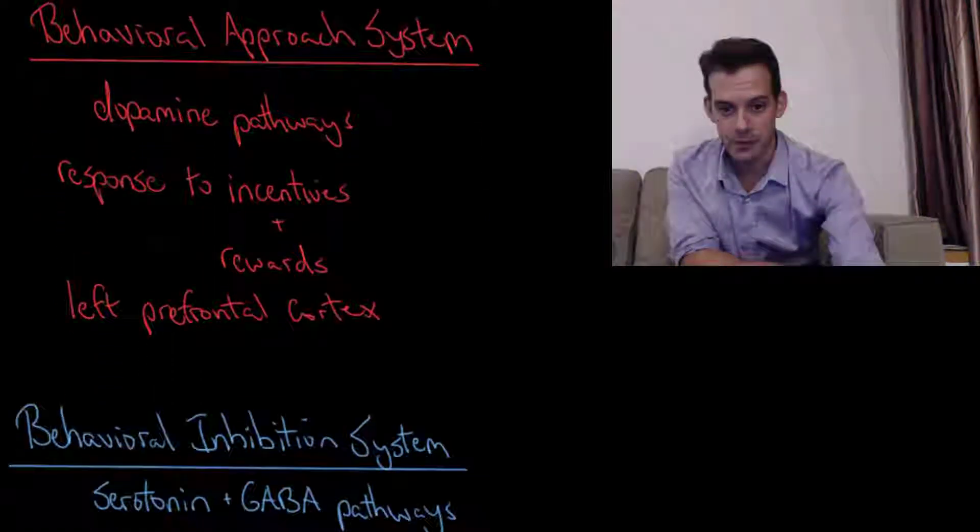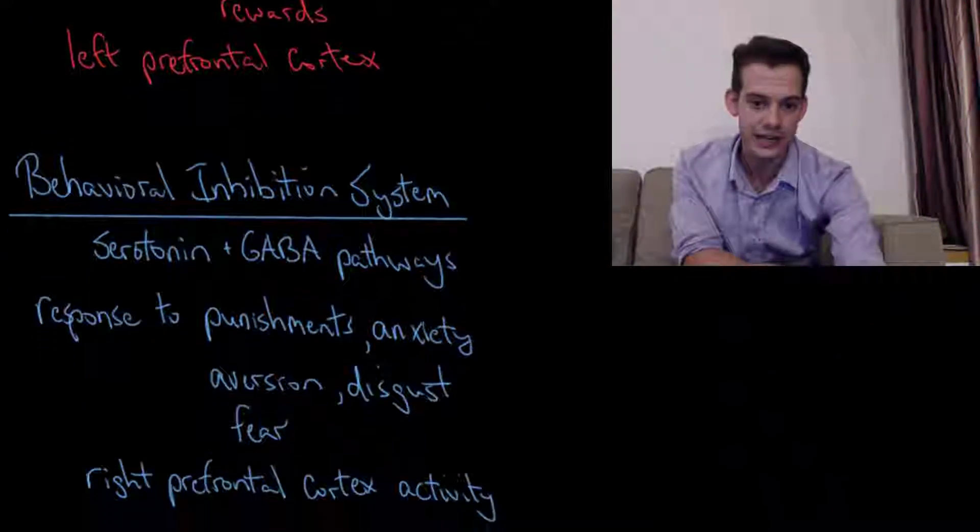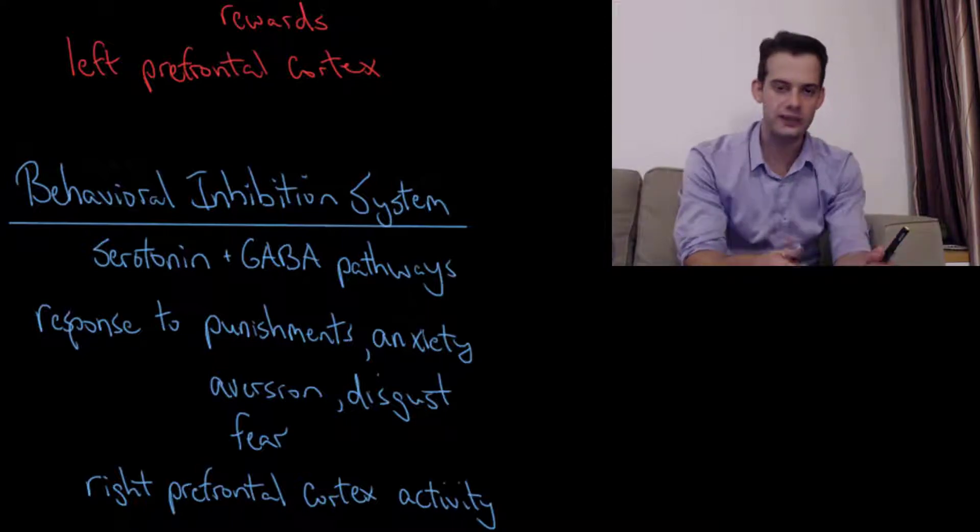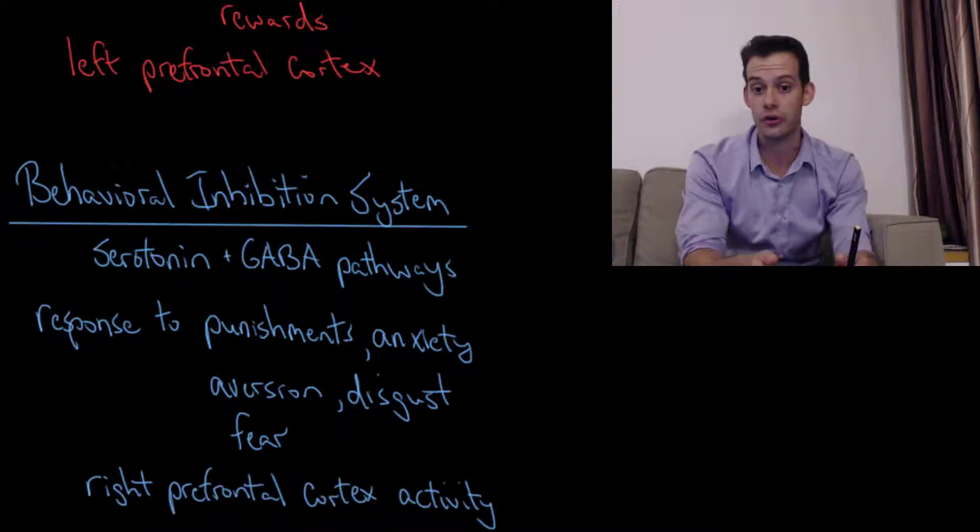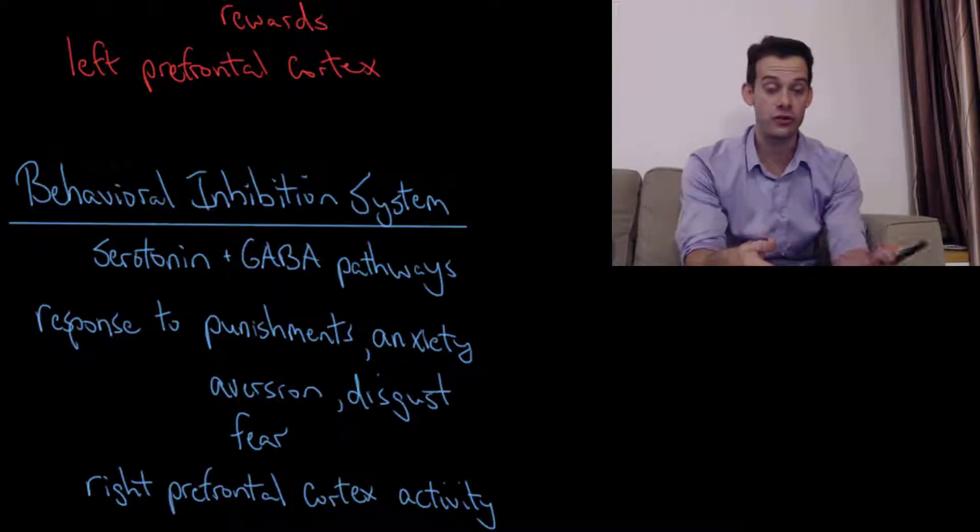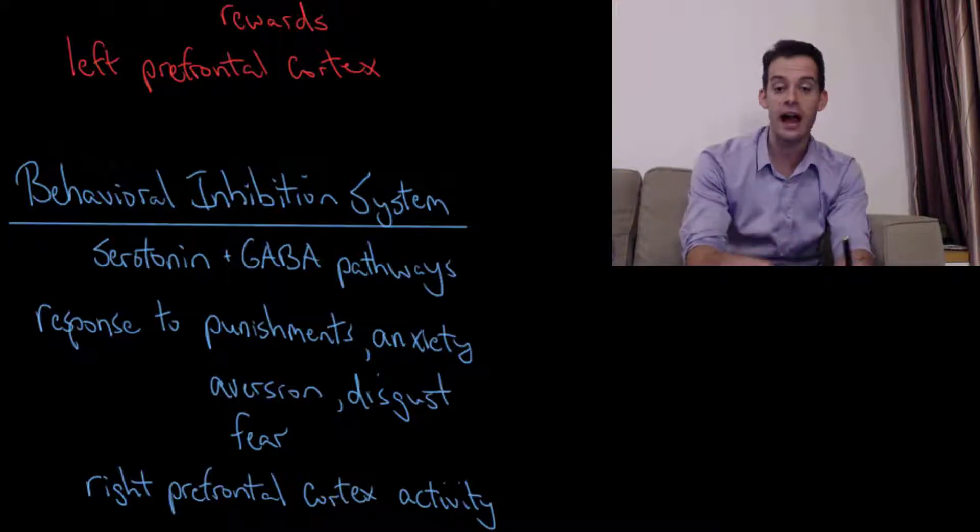And we also have an opposing system and this is the behavioral inhibition system. And so this is a system that uses pathways that use the neurotransmitters serotonin and GABA which are inhibitory neurotransmitters and this system is more about the response to punishments, anxiety, aversion, disgust, fear. It's inhibition, it's withdrawal. It's pulling you back and it's more associated with negative emotions. And it's also associated with higher levels of activity in the right prefrontal cortex.